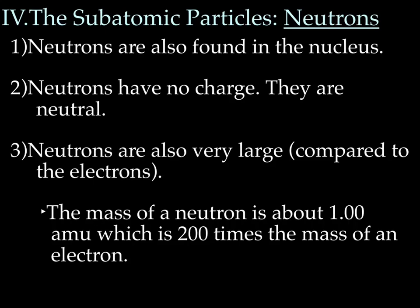The next subatomic particle is the neutron. Neutrons are also found in the nucleus. Neutrons are neutral — they have no charge. We symbolize them as n with a zero, meaning no charge. Neutrons are also large compared to the size of electrons. They're about the same size as a proton, also having a mass of about 1 AMU.